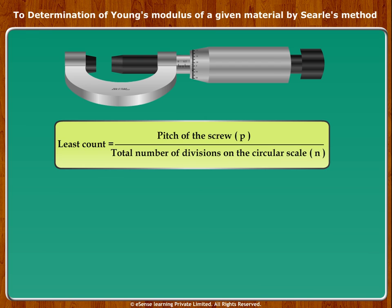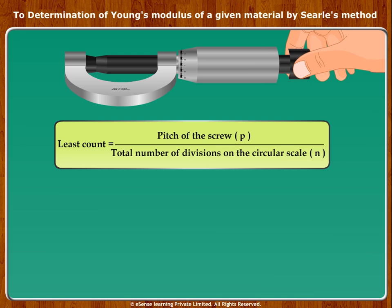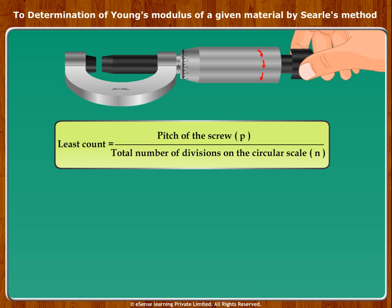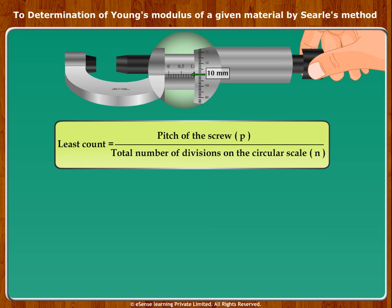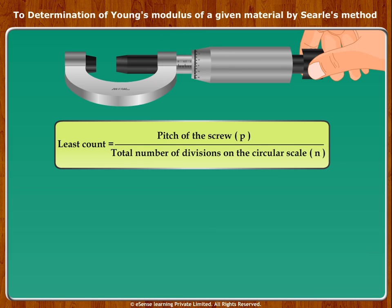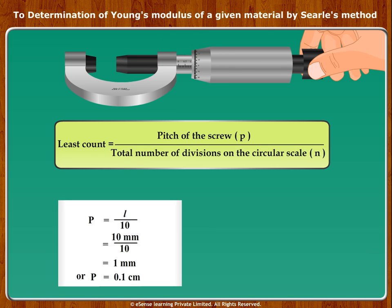To find the pitch of the screw, rotate the circular scale completely until circular scale 0 coincides with 0 of the reference line. Now give 10 rotations to the circular scale and note the distance L covered by the screw on the pitch scale. It is 10 millimeters. Hence, pitch of the screw P is equal to L upon 10, equal to 10 mm upon 10, equal to 1 mm, or P is equal to 0.1 centimeter.